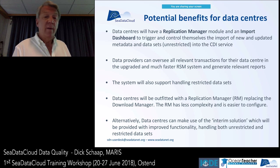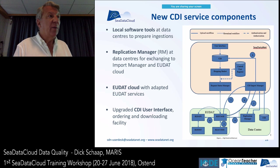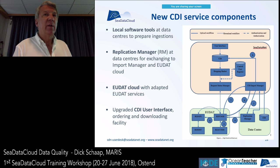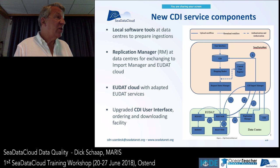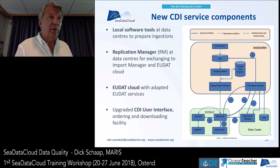We will invite the interim solution users to review whether they can release some data as unrestricted, making it part of the cloud for faster delivery to users. These are the new components: the local software — Mikado, Octopus, NEMO — the software tools used to prepare your metadata and data; then the Replication Manager to be installed at each center for exchanging metadata and data with the Import Manager and with U.Cloud; then U.Cloud with storage and processing services for quality control; and finally the upgraded CDI interface.